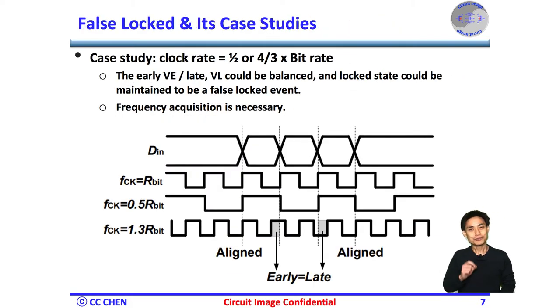Here we go. The VCO's frequency will start at zero and settle down at any frequencies. If the PD's output early or VE-VL were balanced, the tri-state will drive the VCO into a false lock state. The three case images show you that the PD output can be balanced and the clock rate equals the real bitrate, half bitrate, and 1.3x bitrate. Unfortunately, there is no guarantee that the clock rate will be only locked to the bitrate, but locked to other rates causing sampling error since the self-aligned property does not apply anymore.